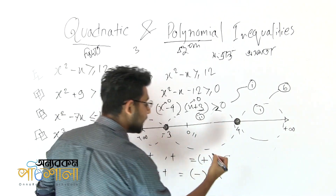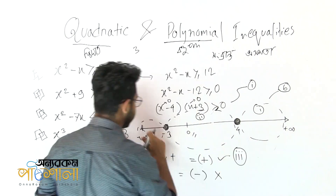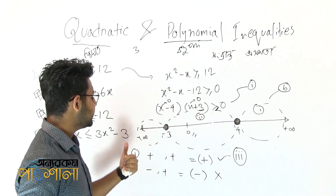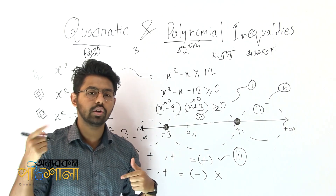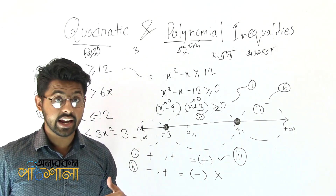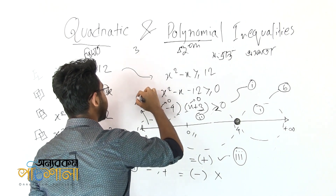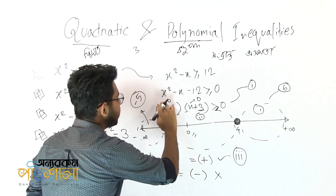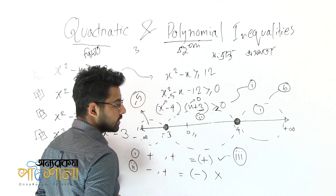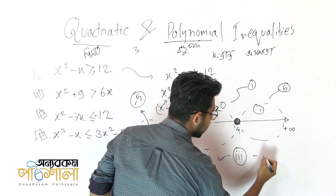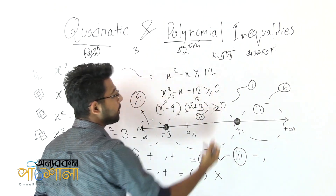The answer to this inequality: one interval is from minus infinity to minus 3, and another is from 4 to positive infinity. So the solution is x ≤ -3 or x ≥ 4, giving us (-∞, -3] ∪ [4, +∞).